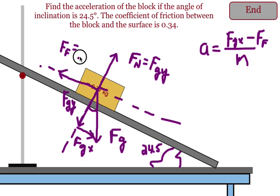Remember, you get force friction by doing the coefficient of friction times the force normal. And force normal is the y part of gravity. So with this, you should be able to find the acceleration of the block down the incline.